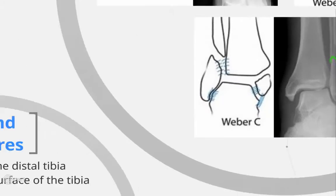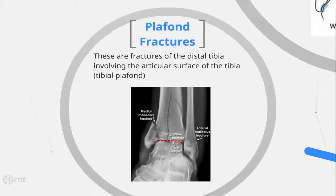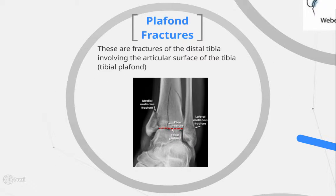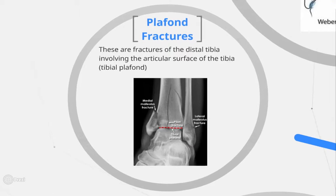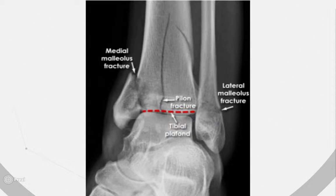Plafond fractures, or pilon fractures: the mechanism of injury involves a large force that drives the talus upwards against the tibial plafond. There is accompanying damage to the articular cartilage, and in severe cases the comminution extends up the tibial shaft. Prompt reduction is necessary. On x-ray, fractures of the distal end of the tibia extending up into the ankle joint and possibly up the tibial shaft can be seen. Treatment requires a high level of expertise as the surgery involved is quite complex.